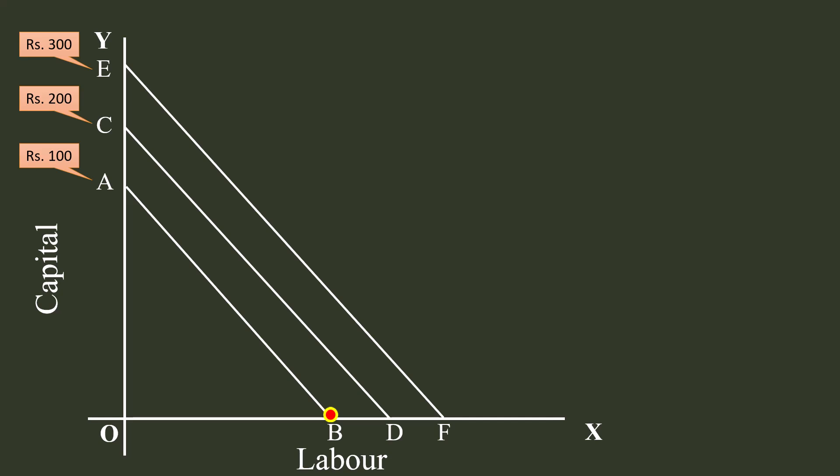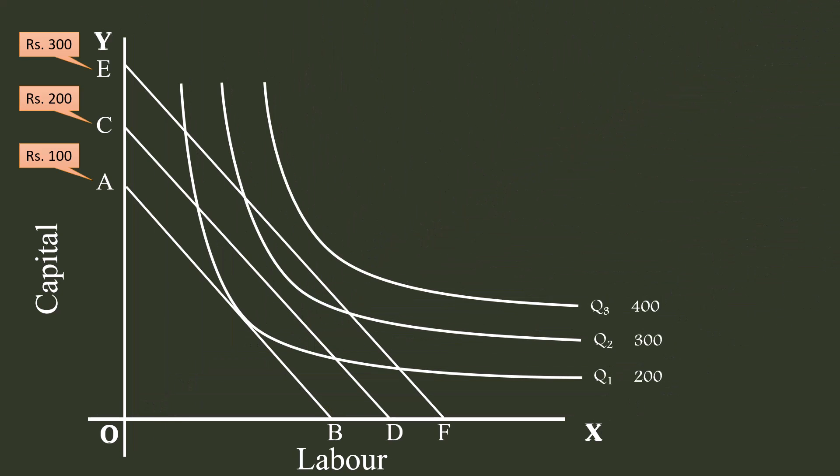The producer possesses sufficient knowledge about the combinations available, outlay, and prices of two factors. With this knowledge, he wants to strike at an optimum combination or least cost combination. We have to superimpose the isoquant map on the isocost graph. The aim of the producer is to produce a given output with a minimum cost combination.